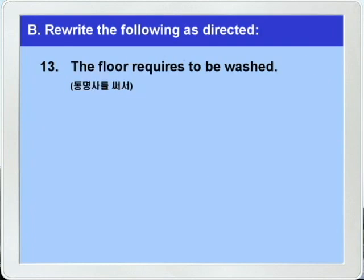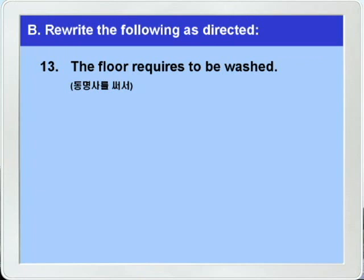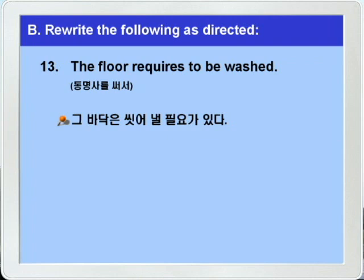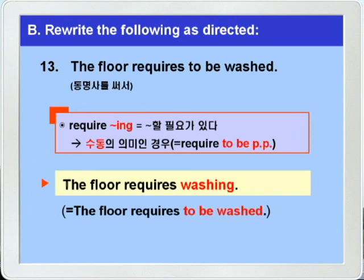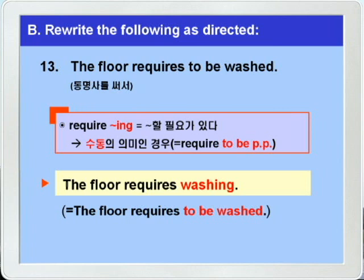다음 마지막 13번입니다. 'The floor requires to be washed' — 그 바닥은 씻겨질, 즉 씻어낼 필요가 있다. 정리하면 그 바닥은 씻어낼 필요가 있다. 동명사를 써서 바꾸는 문제인데요. 'require -ing' 하면 '뭐뭐 할 필요가 있다'란 뜻으로, require 다음에 나오는 -ing 즉 동명사가 능동의 의미뿐만 아니라 수동의 의미를 나타내는 경우도 있습니다. 따라서 'The floor requires washing' 이라고 바꾸면 되겠죠. 정답: 'The floor requires washing.' 자 이것으로 A와 B번 문제를 모두 풀어보았습니다.